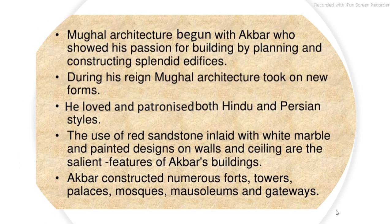Mughal architecture began with Akbar, who showed his passion for building by planning and constructing splendid edifices. During his reign, Mughal architecture took on new forms. He loved and patronized both Hindu and Persian styles. The use of red sandstone inlaid with white marble and painted designs on walls and ceiling are the salient features of the buildings of Akbar. Akbar constructed numerous forts, towers, palaces, mosques, mausoleums and gateways.